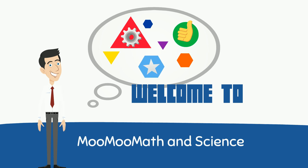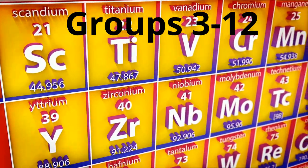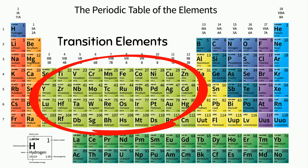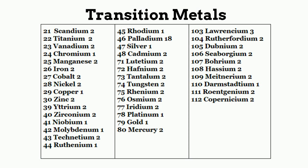The transition metals are the elements found in groups 3 through 12. According to the International Union of Pure and Applied Chemistry, a transition metal is an element with a partially filled D subshell or the capacity to produce cations with an incomplete D subshell. Using this definition, here is a list of 40 transition metals with their number of valence electrons.